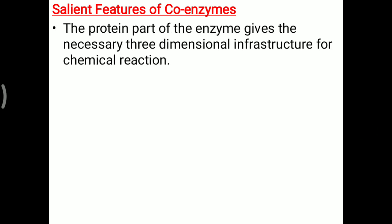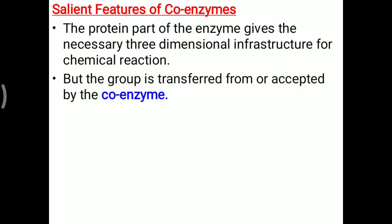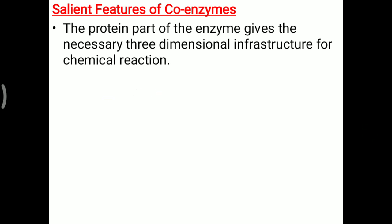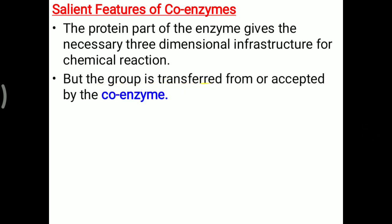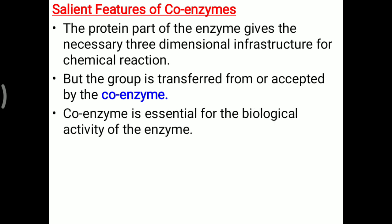The main features of coenzyme: the protein part of enzymes provides the necessary three-dimensional infrastructure for the chemical reaction, while groups are transferred from or accepted by the coenzyme. Various molecules are accepted or transferred via the coenzyme. Examples of coenzymes include NADH, NADPH, and ATP, which work as coenzymes to accept or transfer molecules during enzyme activity.